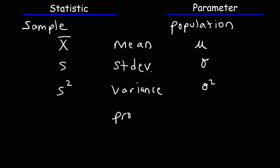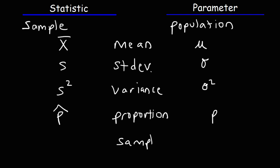We also have proportions. The sample proportion is simply p-hat. The population proportion is simply p. Finally, the size of the sample is represented by the symbol lowercase n — that would be a statistic. The size of the population is represented by the symbol capital N — so that is a parameter.